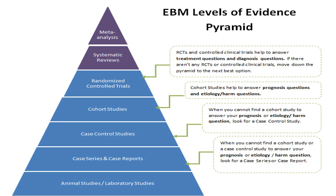Followed by the randomized control trial, then cohort studies, then case control studies, followed by case series and case reports, and finally laboratory studies, expert opinion, and expertise. This pyramid differs across different organizations and temporal variations also exist in this hierarchy. The type of study has its own hierarchy — for example, interventional studies, prognostic studies, and diagnostic studies have different types of pyramids. So it is up to you to search for such things and find out which is suitable for your research question.